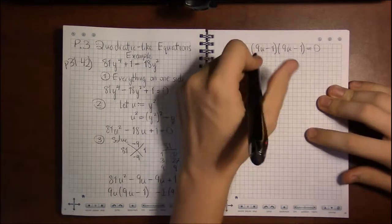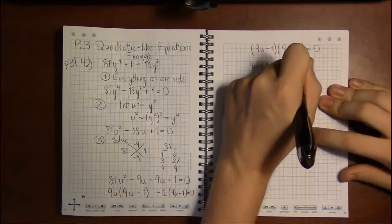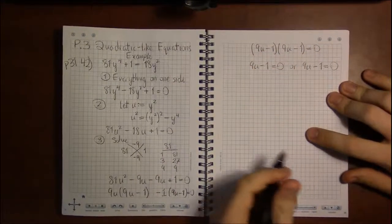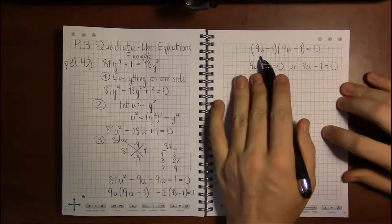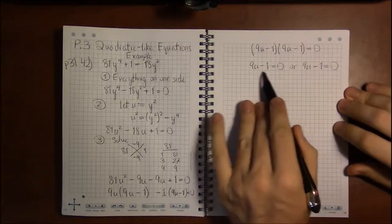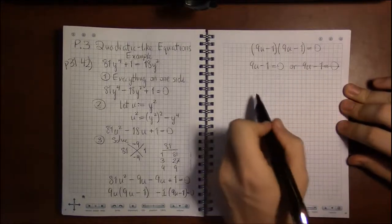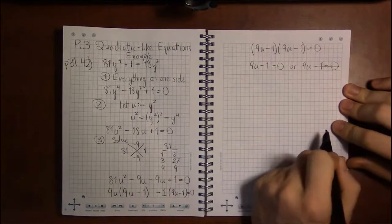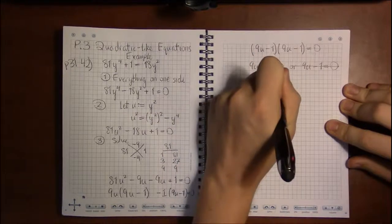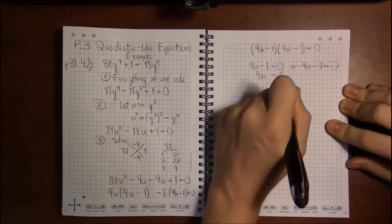So I split this up into 9u minus 1 equals 0, or 9u minus 1 equals 0, which is kind of dumb. This is a perfect square. Now this is just 9u minus 1 squared is a quicker way to write this. So all I need is for 9u minus 1 to be 0. This condition is the same thing. It's redundant. So I don't need it. I just need to focus on it once. I don't need to solve the same problem twice. That's the better way of putting this. Add 1 to both sides. Divide both sides by 9. And there's u. But you're not done.